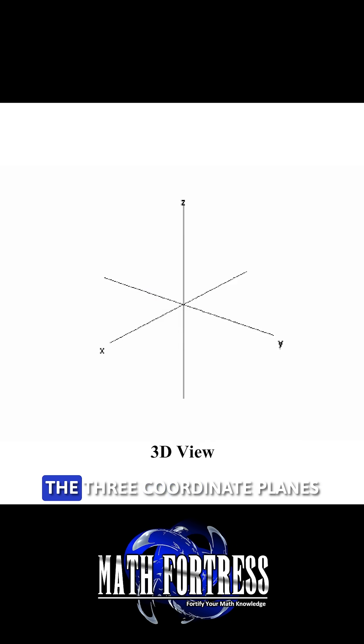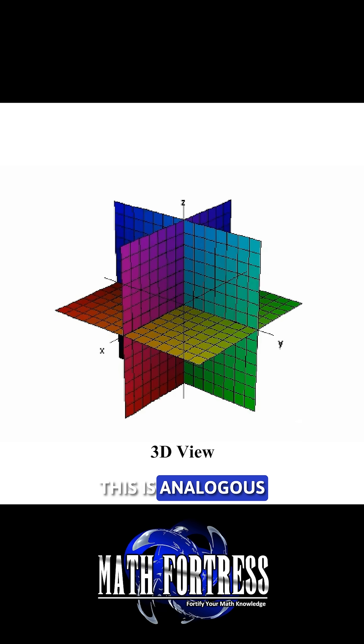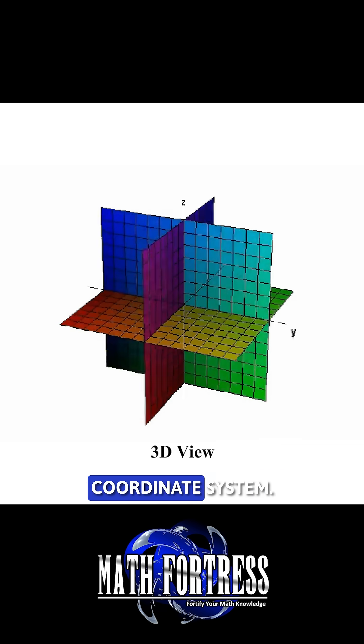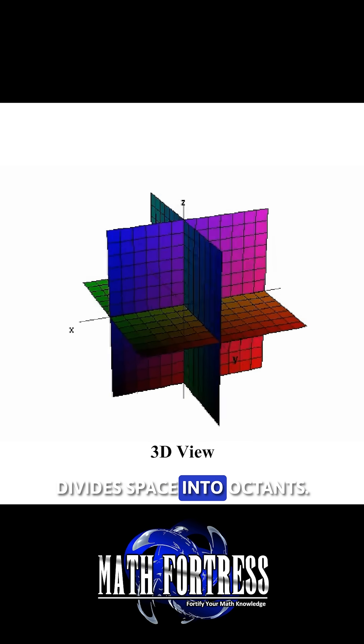Together, the three coordinate planes divide space into eight regions called octants. This is analogous to the quadrants of a two dimensional coordinate system. In this case, a three dimensional coordinate system divides space into octants.